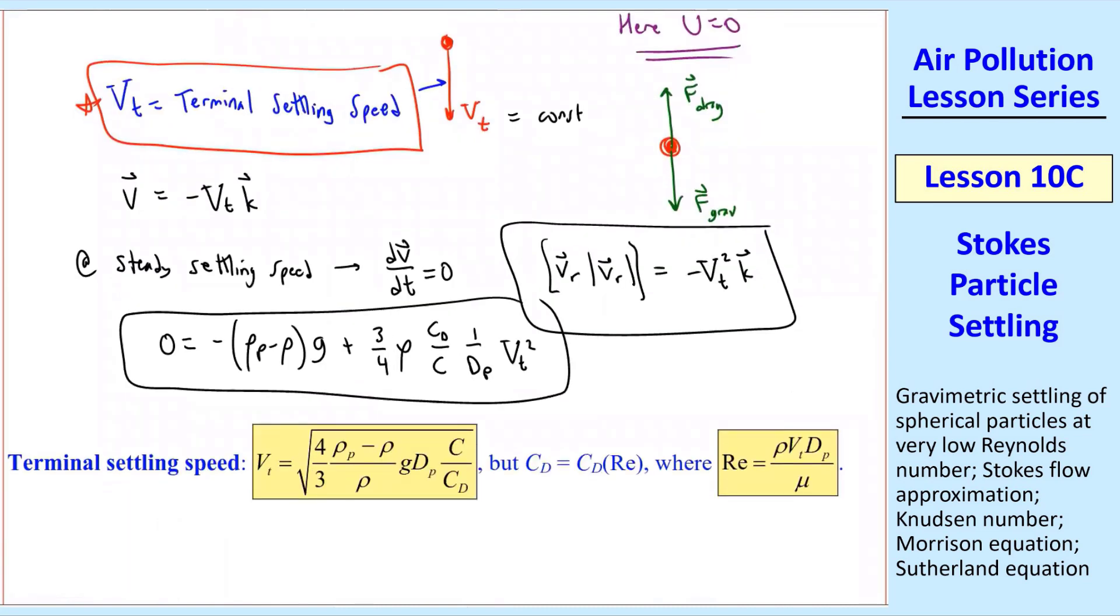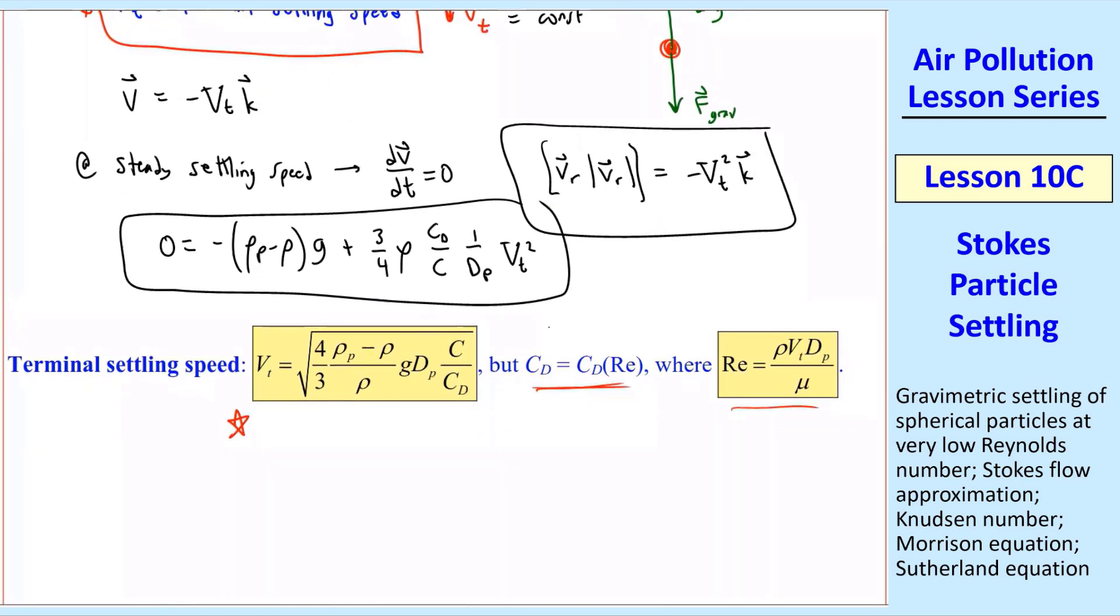So this is the terminal settling speed for a particle that's falling in still air. And notice that cd is a function of Reynolds number, and this is Reynolds number again. We use Morrison's equation. That looks like a nice simple equation, and we should be able to solve it, but there's a problem.